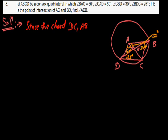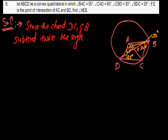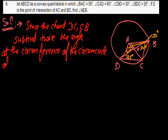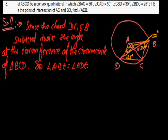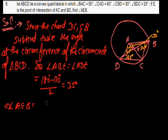Since chord DC subtends twice the angle at the circumference of the circumcircle of triangle ABC, angle ABE = angle ADE = (180° − 110°)/2 = 35°. Hence angle AEB = 180° − (50° + 35°) = 95°. That is our answer.